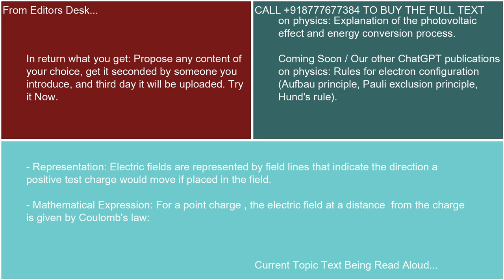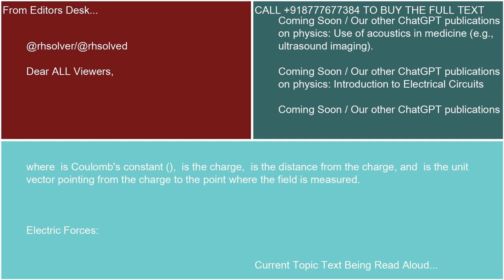For a point charge, the electric field at a distance from the charge is given by Coulomb's law, where k is Coulomb's constant, q is the charge, r is the distance from the charge, and r-hat is the unit vector pointing from the charge to the point where the field is measured.